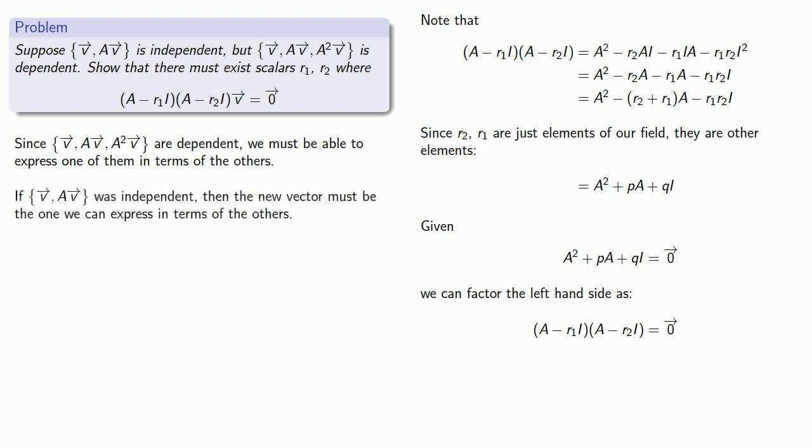Now, if v, Av was an independent set, then the new vector, A²v, must be the one we can express in terms of the others.